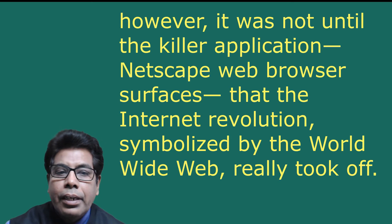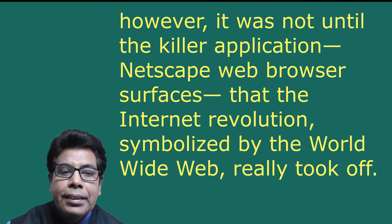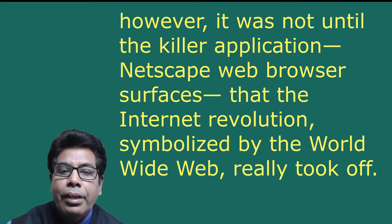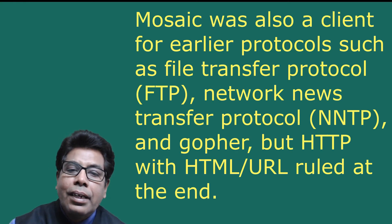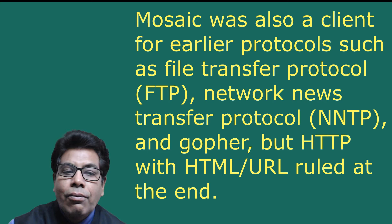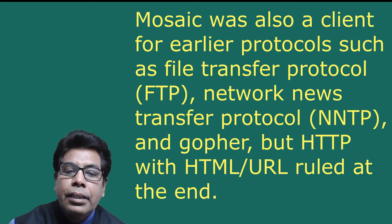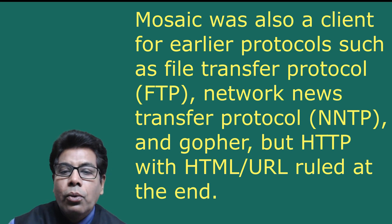The invention of HTML, HTTP, and URL on top of the TCP/IP-based internet started the internet revolution. However, it was not until the killer application — the Netscape web browser — that the internet revolution symbolized by the world wide web really took off. The Netscape web browser evolved from the earlier Mosaic web browser. Mosaic was also a client of earlier protocols such as File Transfer Protocol (FTP), Network News Transfer Protocol (NNTP), and Gopher, but HTTP with HTML and URL ruled in the end.